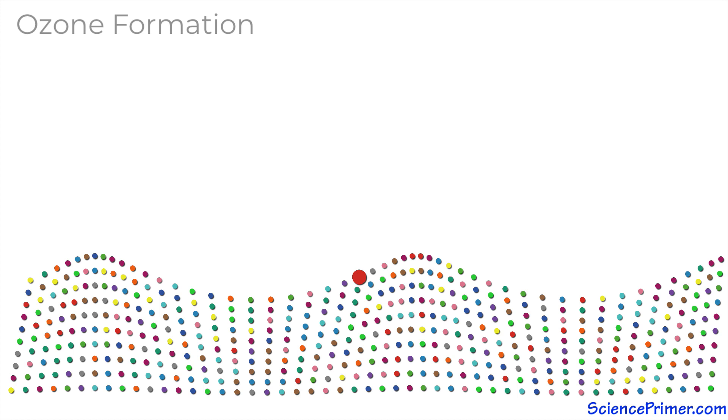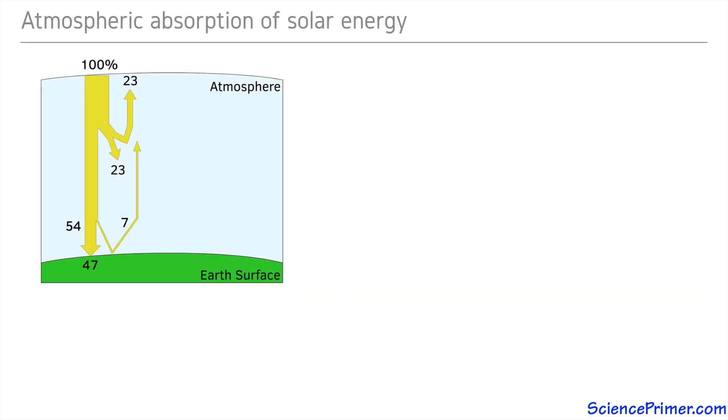Almost half of all the solar energy that enters the top of the Earth's atmosphere is either reflected back out into space or absorbed by molecules in the atmosphere.